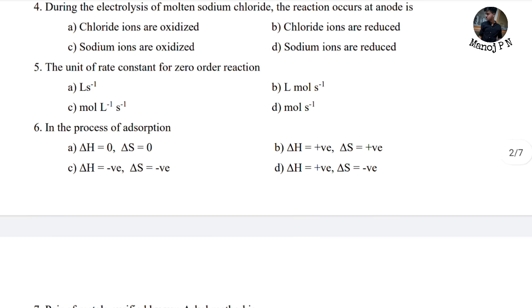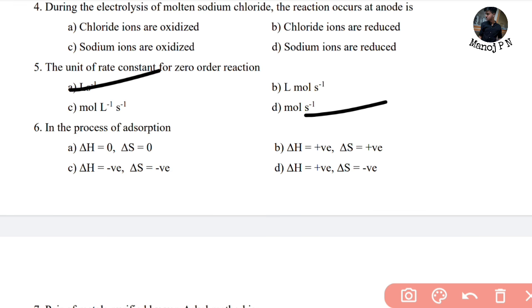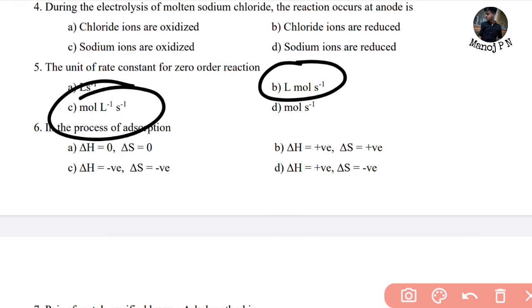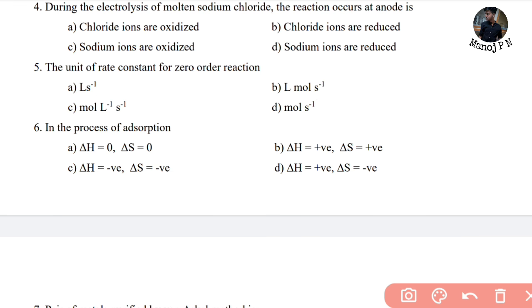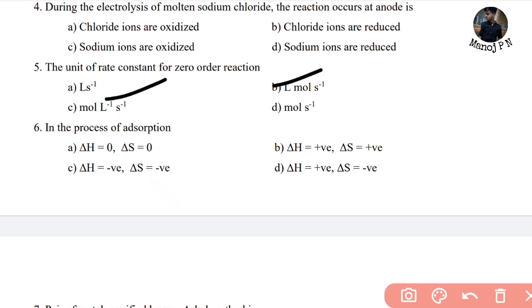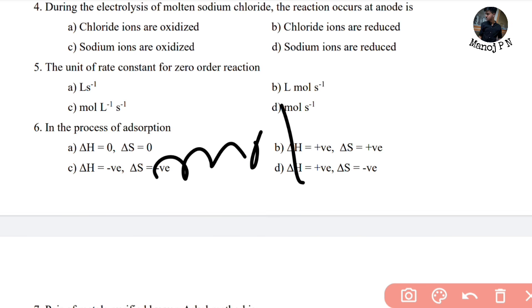The unit of rate constant of 0th order — simple. Using common sense, option C is your answer: mol per liter per second.